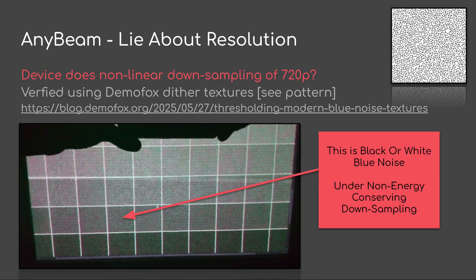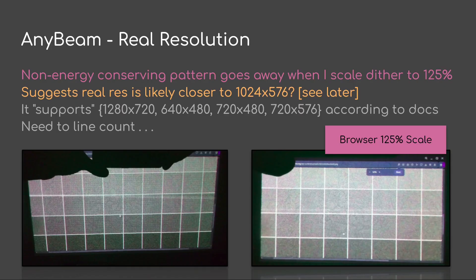The resolution is definitely not 720p. One way to verify this is to go to DemoFox's website, pull some of his dither textures, and look at them at 720p native with no scaling. If you look at these, you notice a pattern that isn't in the texture — it's something synthetically showing up on the screen above the texture at a lower frequency. I think this is non-energy-conserving downsampling happening here. I don't know the real resolution at this point. However, I tried adjusting the browser scale on the image until the pattern went away, and somewhere around 125% the distortion disappeared, which suggests the real resolution might be closer to 576p.